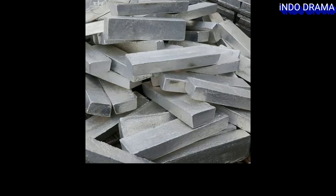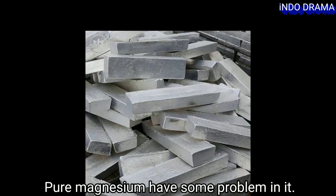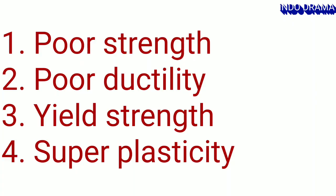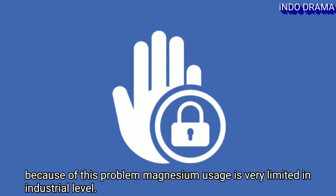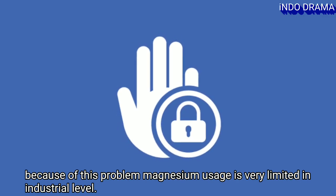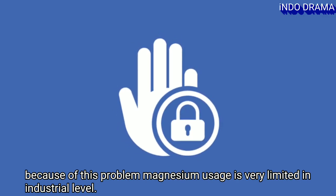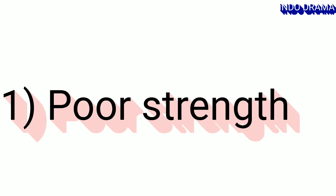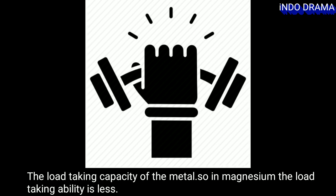Pure magnesium has some problems: poor strength, poor ductility, poor yield strength, and poor super plasticity. Because of these problems, magnesium usage is very limited at the industrial level. Poor strength defines the load bearing ability of the metal, and in magnesium the load bearing ability is very less.